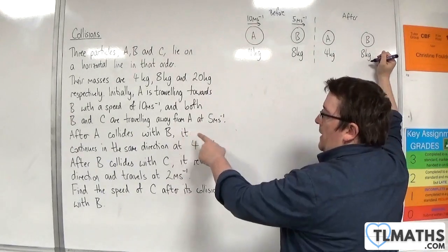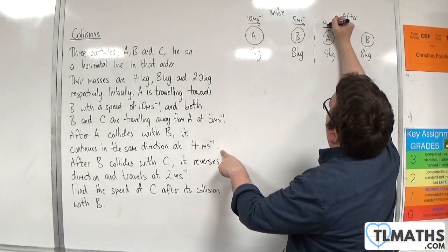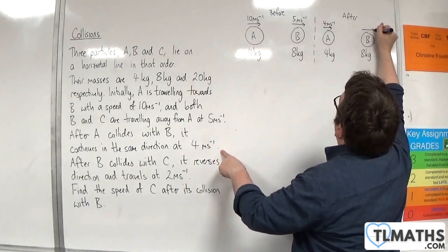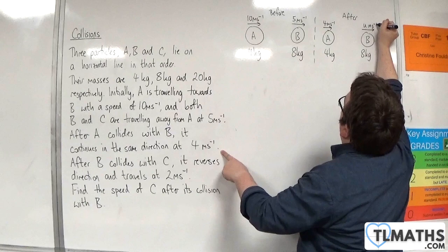Now, after A collides with B, it continues in the same direction at 4 metres per second. And I need to find B's speed. So I'm going to label that as U.